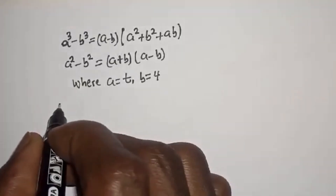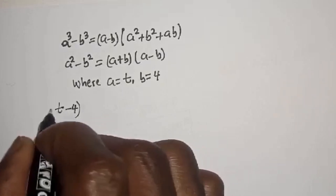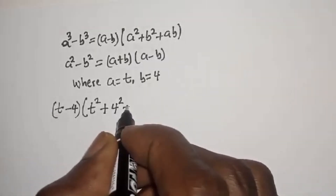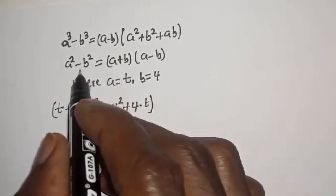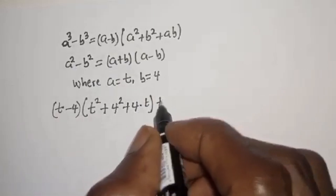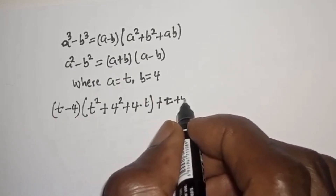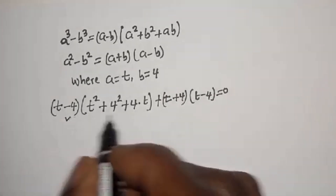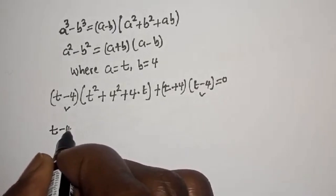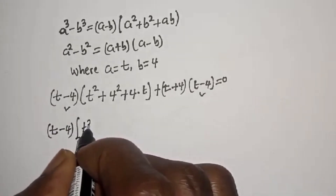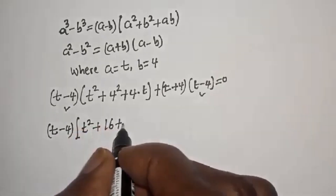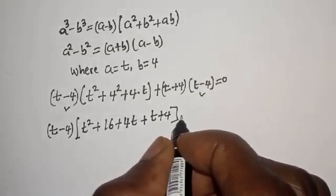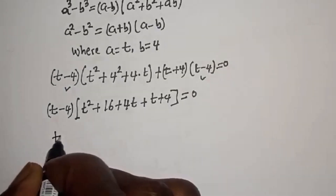Now a raised to power 3 minus b raised to power 3 gives t minus 4, multiplied by t squared plus 4 squared plus 4 times t. Then considering a squared minus b squared, we get t plus 4 multiplied by t minus 4 equals zero. So t minus 4 is common: t minus 4, multiplied by t squared plus 16 plus 4t, then plus t plus 4, equals zero.